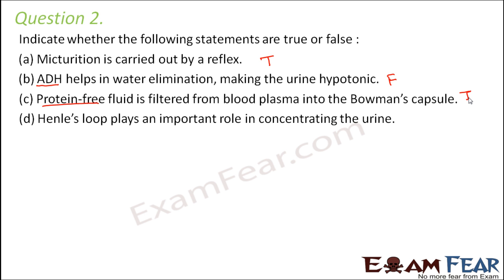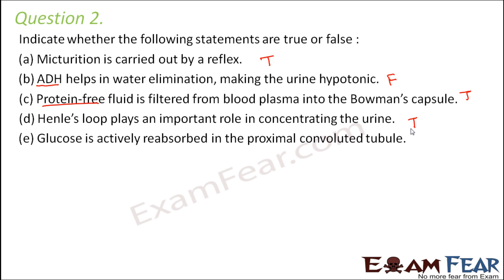Fourth statement — Henle's loop plays an important role in concentrating urine. That is true because it helps in removing water in the descending limb, thereby concentrating the urine. Fifth statement — glucose is actively reabsorbed in the proximal convoluted tubule. The PCT is where maximum reabsorption of nutrients takes place, so glucose is also actively reabsorbed there. This is also true.